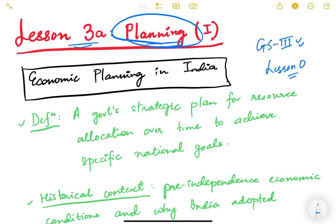Let us see how economic planning is done in India: what model do we follow, what is the history of it, and how have we arrived at the present model of economic planning. We need to have a basic understanding of the entire economic system right from independence. There are some reasons why we adopted planning in India, some attributed to the colonial regime before independence.